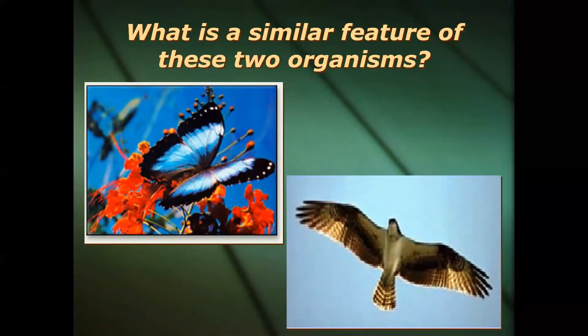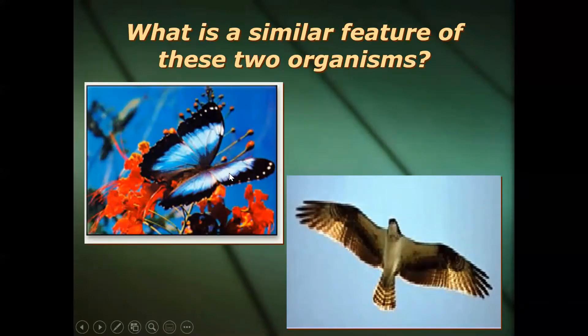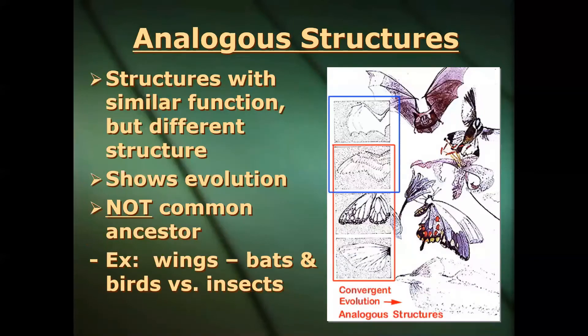Now notice these two: a bird and a butterfly. They both fly because they both have wings. But are these wings made of the same material? Inside the wing of a bird there are hollowed bones. Do butterfly wings have bones? No — it's just membranous tissue. This is what we call analogous structures — structures with the same function, but structure-wise they are completely different. It's pretty much the opposite of a homologous structure.